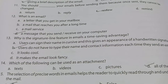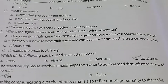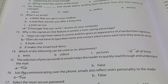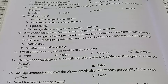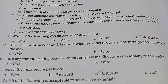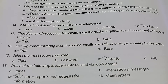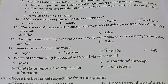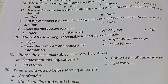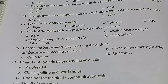Which of the following can be used as an attachment? All of the above. The selection of precise words in emails helps readers — that is true. Just like communicating over the phone, emails also reflect one's personality to the reader — true. For a more secure password, select option C. The acceptable work email to send is brief status reports and requests. The best email subject is 'Department Meeting Cancelled.' Before sending an email, you should do all of the above.